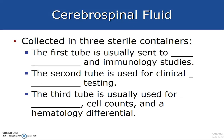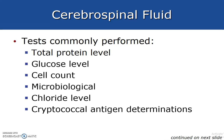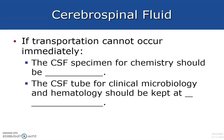CSF is collected in three numbered containers. The first tube is sent to microbiology and immunology studies. The second tube is used for clinical chemistry, and the last tube is used for hematology. Common tests performed include total protein levels, microbiological chloride levels, cell count, and glucose level. The CSF specimen for chemistry should be refrigerated, while the CSF tube for clinical microbiology and hematology should be kept at room temperature.